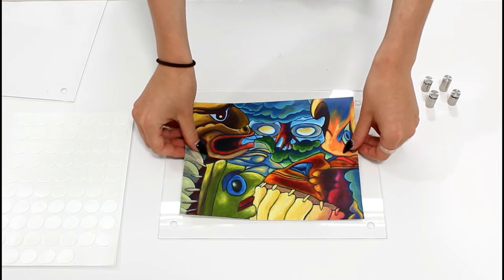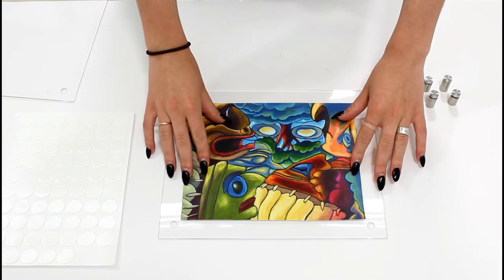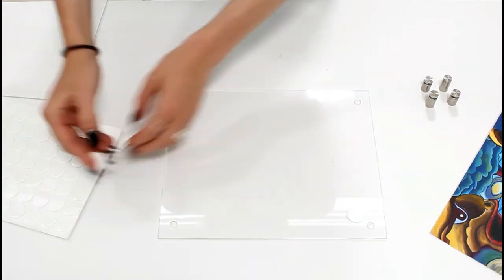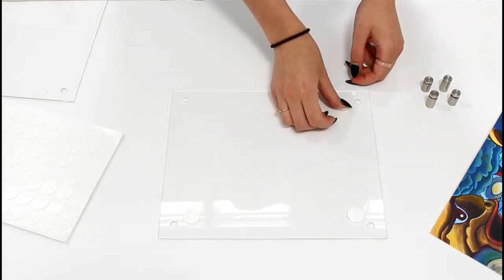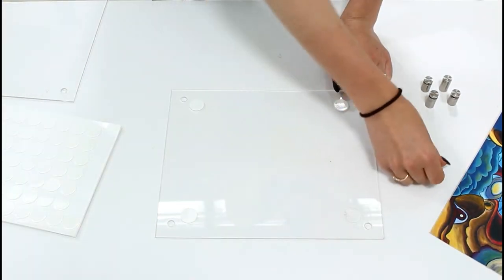Step 1. Place your artwork on top of the acrylic sheet and use double-sided adhesive stickers to restrain the artwork from moving and center it within the frame space.